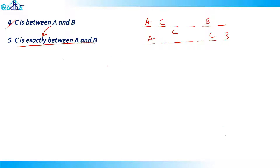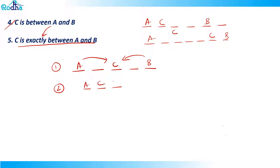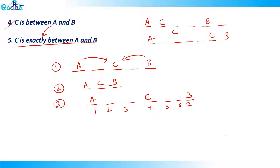When C is exactly between A and B, for example, two places left and two places right of A and B — that's one case. Another case: three, two, four; or three, two, five; or two, seven. If A is at position one and B is at position seven, C is at position four — exactly between. Or A at three, B at five, C at four — that's also exactly between A and B. That's the difference between 'between' and 'exactly between' in linear arrangement.